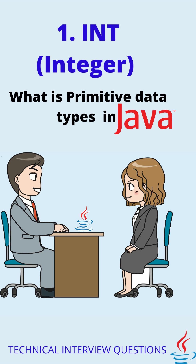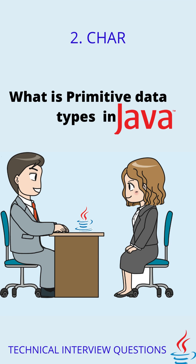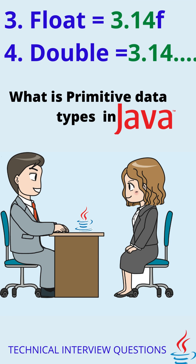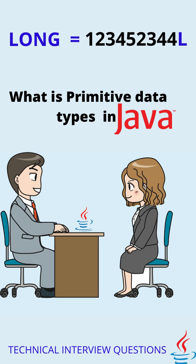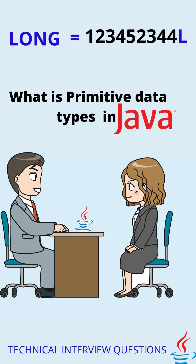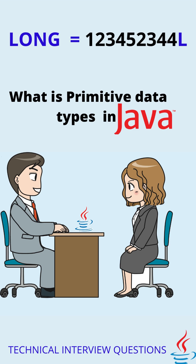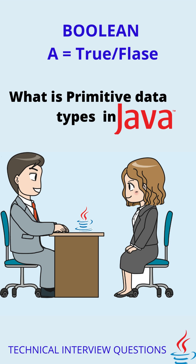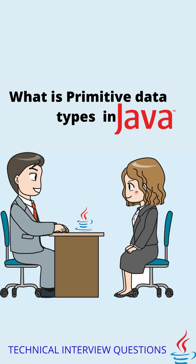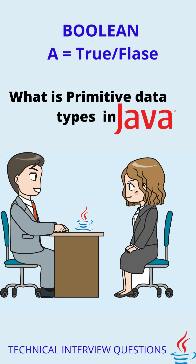Int is used to store numeric digits. Char is used to store characters. Float is used to store floating point numbers. Double is used to store larger decimal numbers. Long is used to store numeric digits which cannot be stored in int. Boolean is used only to store values like true or false.